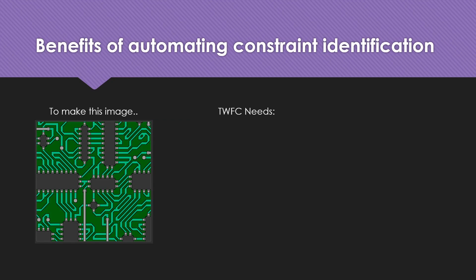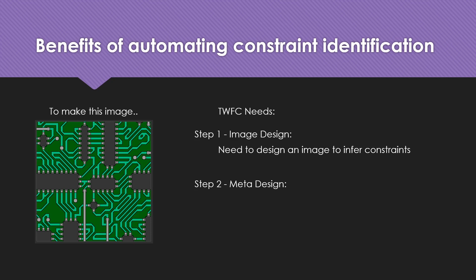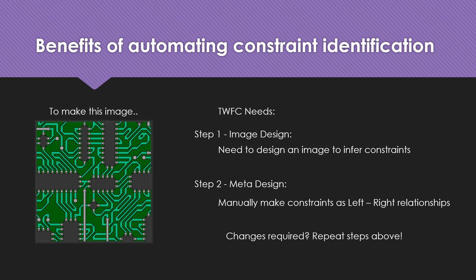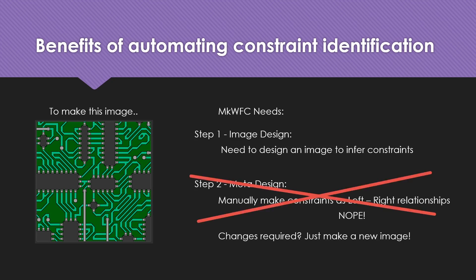When generating an image, TWFC requires both an image design step and a metadata design step. The image design step is required to infer constraints, and the metadata design step specifies the constraints as left-right relationships for the algorithm. If a redesign is required, both steps must be repeated. In the case of MKWFC, however, we have completely eliminated the requirement to design metadata manually. If a change is required, we only need to make a new image and pass it as input to MKWFC.